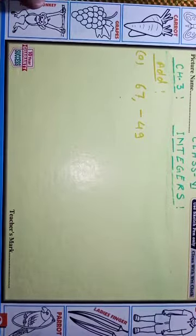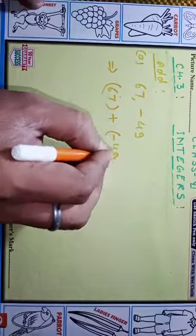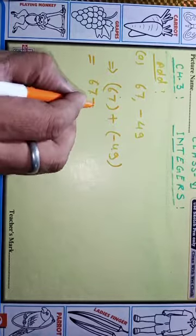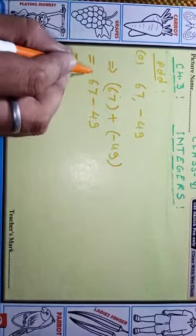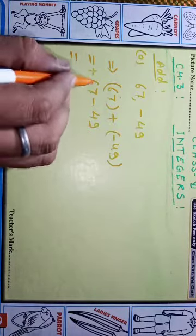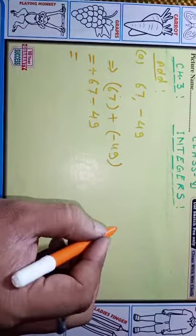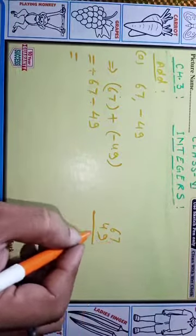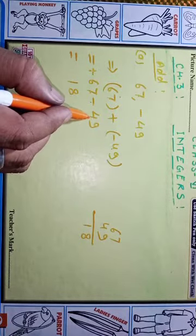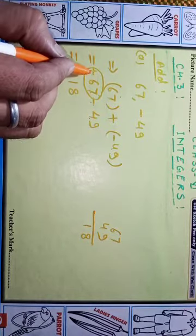Here, 67 plus minus 49. We have plus and minus — if two integers have opposite signs, there will be subtraction. Make the sign of the greatest integer. Here 67 minus 49 equals 18. Now which number is greater? 67, whose sign is plus. So the answer becomes plus 18.